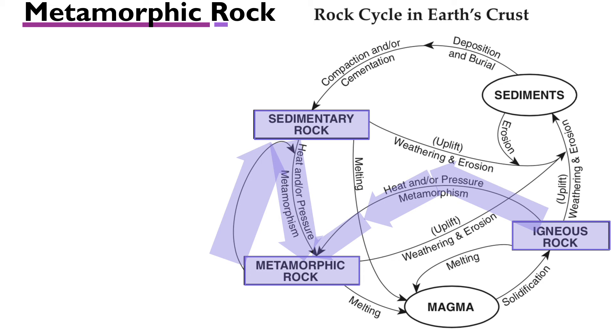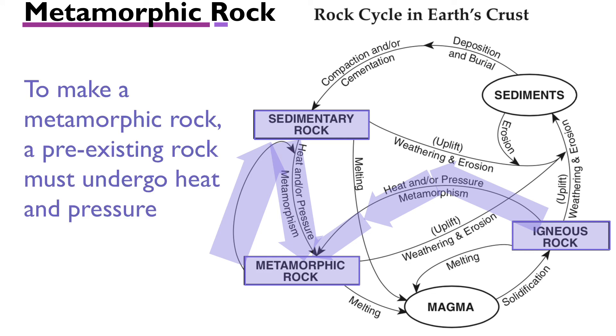You can also have a metamorphic rock follow the arrow up—heat and pressure can turn a metamorphic rock into a different metamorphic rock. A common example is metamorphic rock slate turning into phyllite. More heat and pressure turns phyllite to schist. More heat and pressure turns schist into gneiss.